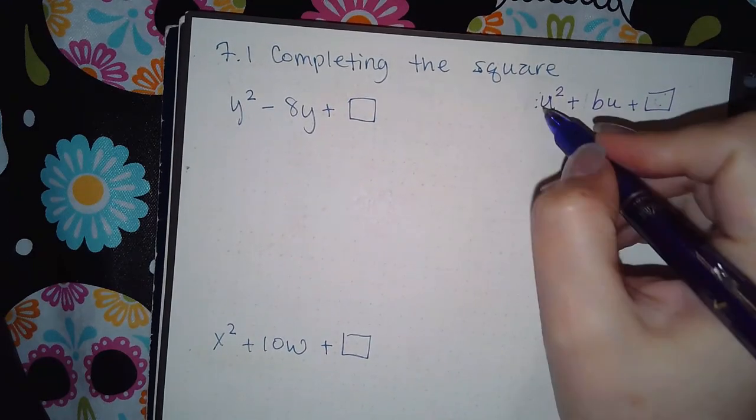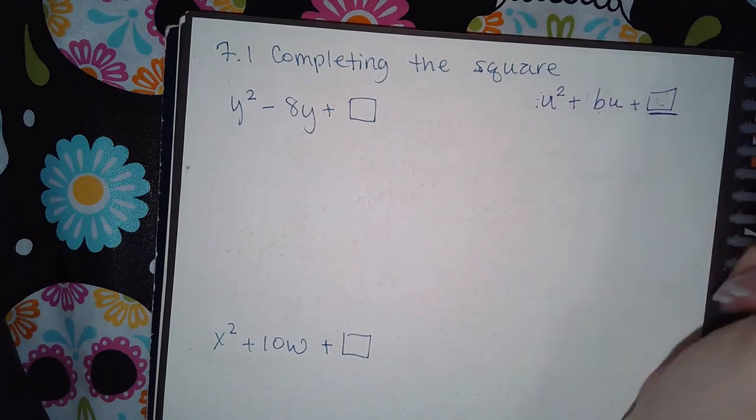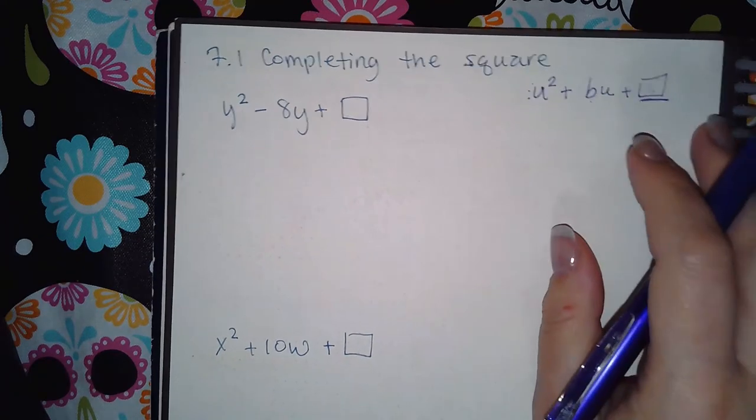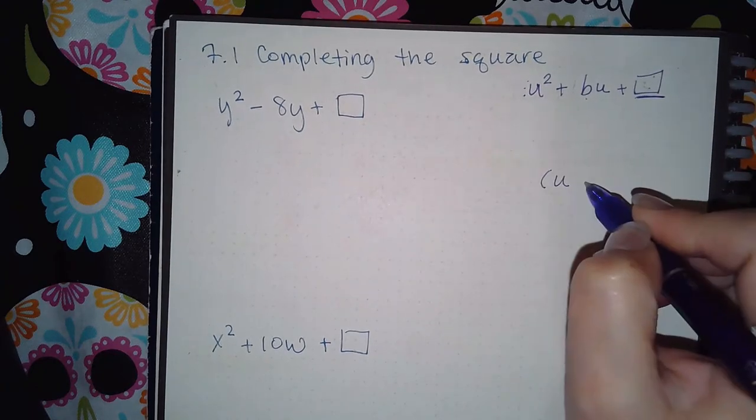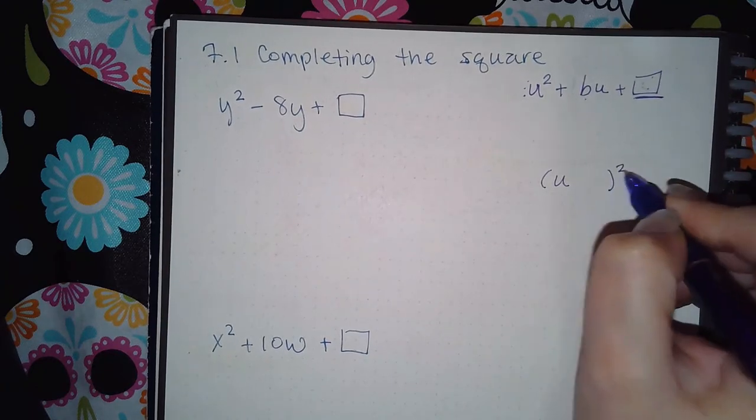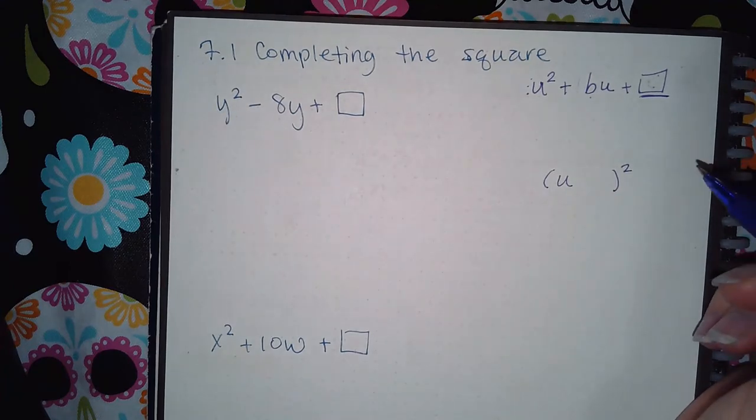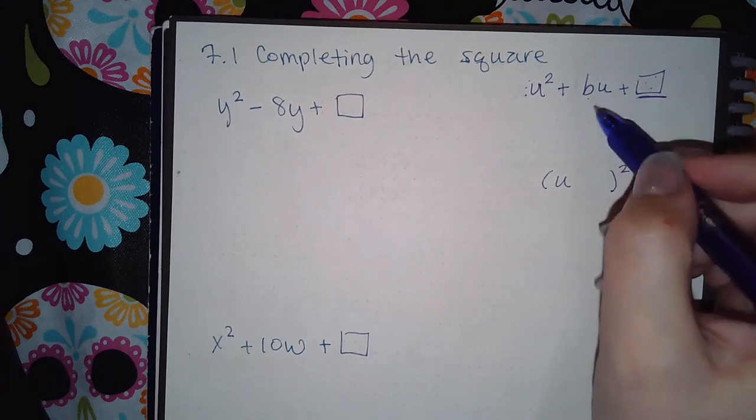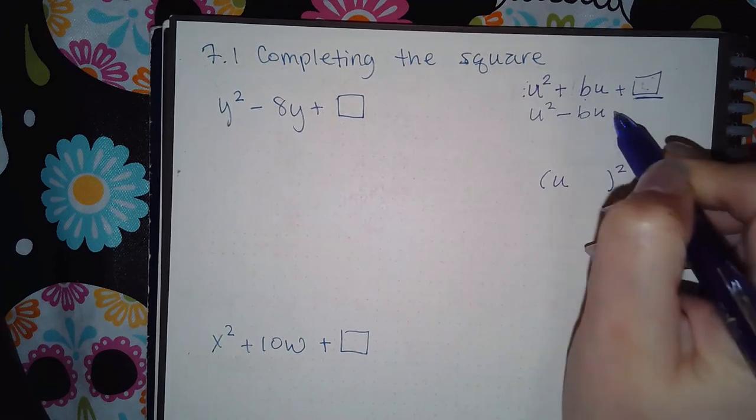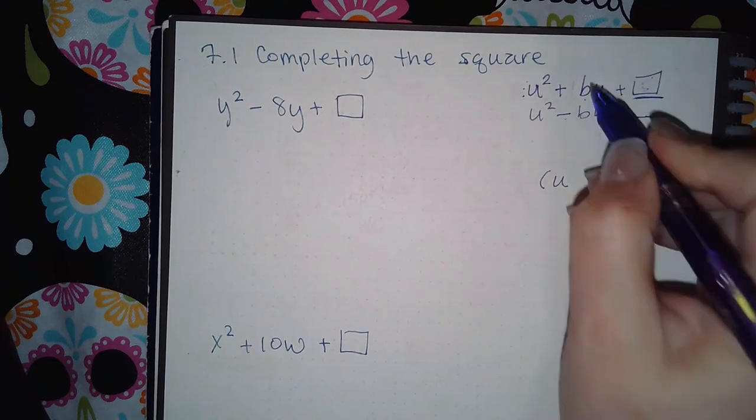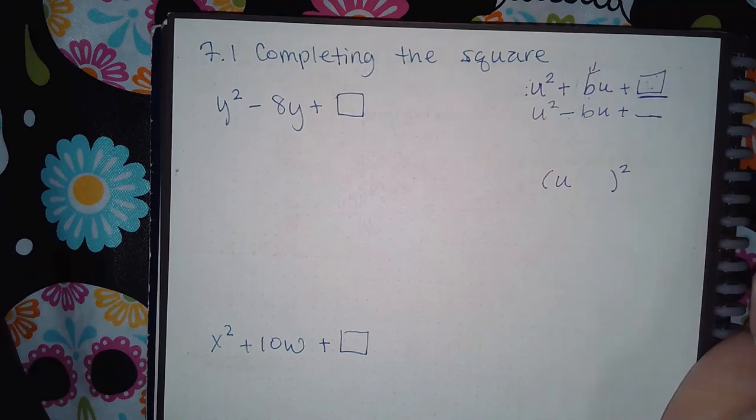Once you have the 1 here and you have the variable here, I want you to figure out what C would be so that if you factored this with that particular C, you would end up with something squared. And if it happens to be U squared minus, all that means is that the B itself was negative.